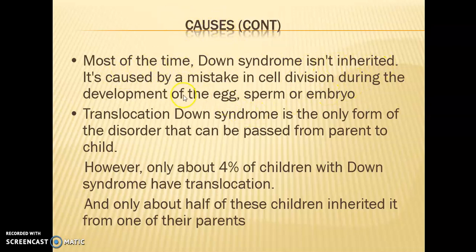Most of the time Down syndrome is not inherited — it is genetic but not inherited. It is caused by a mistake in cell division during the development of the egg. Whenever the ovum and sperm fertilize and form a conception and the embryo is formed, the cell division mistake occurs from the development of the egg or either the sperm or the embryo.